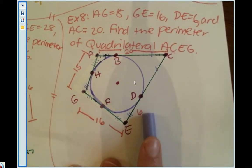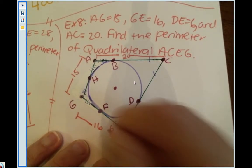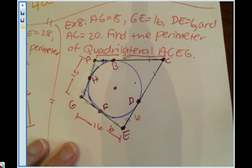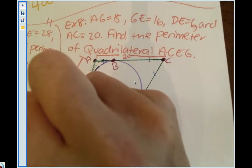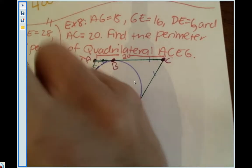If that's six, that means that this piece is six. If GE is 16 and this piece is six, six plus what will give me 16? That would be a 10. Nice. And since this is 10, that is 10.